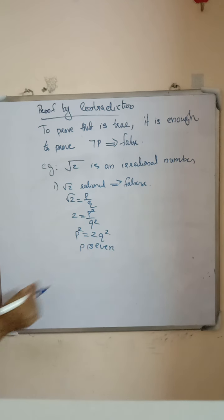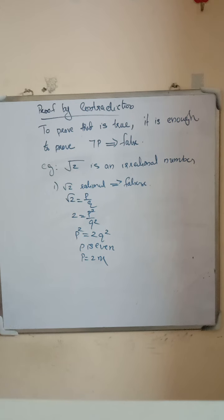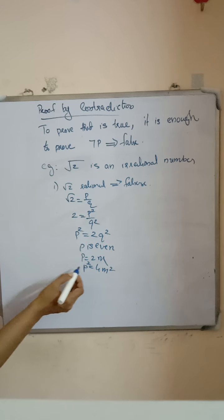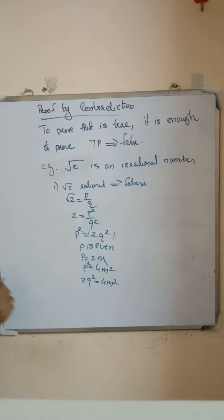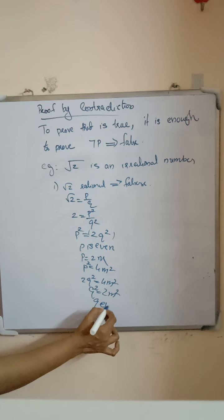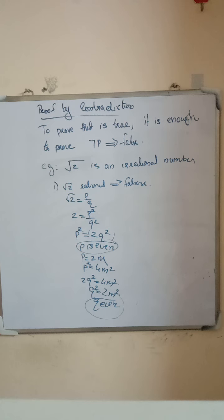We assume that √2 is a rational number. If √2 is rational, then √2 can be represented as P/Q. Squaring, we get 2 = P²/Q², or P² = 2Q². So P is an even number because it is a multiple of 2. Since P is even, write P = 2M, so P² = 4M². Since P² = 2Q², we get 2Q² = 4M², or Q² = 2M². So Q is also an even number. Therefore P and Q are both even numbers, meaning they share a common factor of 2.